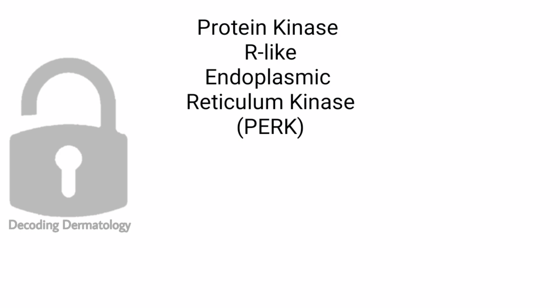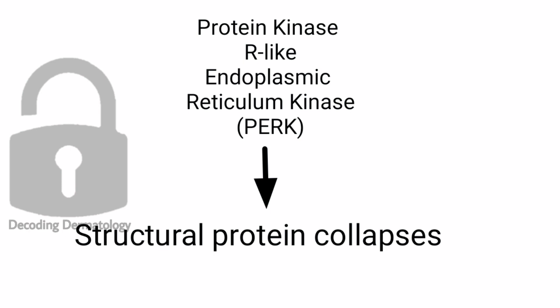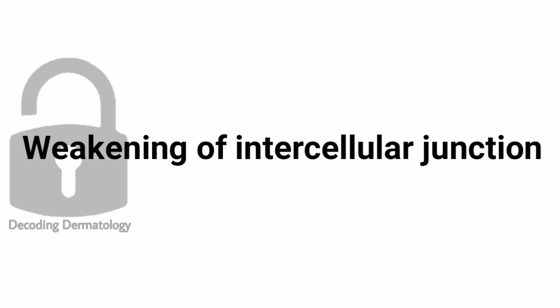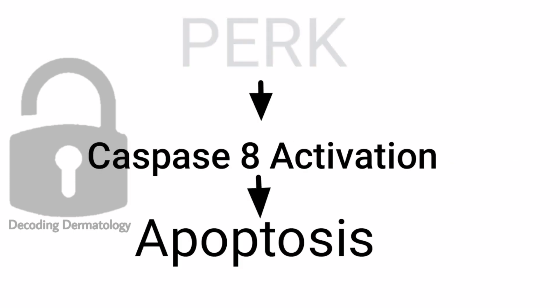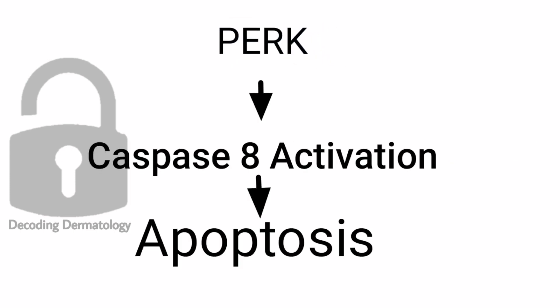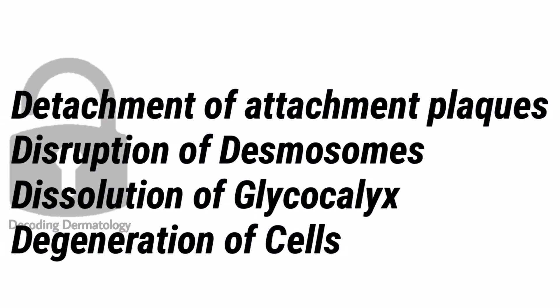One type of protein kinase involved is the PERK — protein kinase-like endoplasmic reticulum kinase. When this gets phosphorylated, the structural proteins collapse, leading to cytoskeletal collapse and weakening of intercellular junctions. This novel PERK receptor is also involved in activating the caspase cascade leading to acantholysis by an apoptosis mechanism. Thus, detachment of tonofilaments, disruption of desmosomes, dissolution of the glycocalyx, and degeneration of the cells occur in acantholysis.